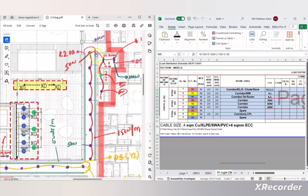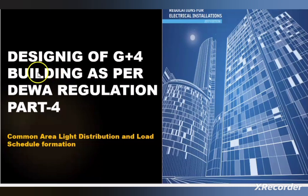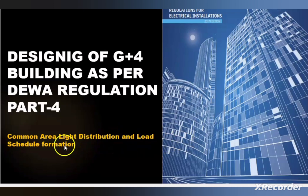So this is all about this video. I hope you clearly understood how to distribute the light load for the common area, how to make the circuit formation, and the tabulation of load in a DIVA approved load schedule format. In Part 5 I will discuss the common area power distribution — general purpose sockets and HVAC load — and prepare the load schedule. If you found my video informative, please hit the thumbs up button, press the bell icon for future updates, and subscribe. Please also comment so I know where I can improve. We will meet in another video — till then take care, keep learning, bye bye, thank you.